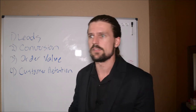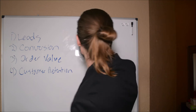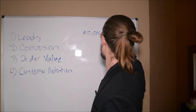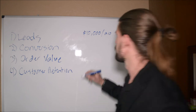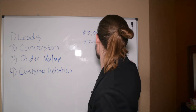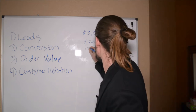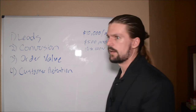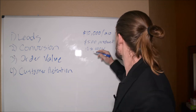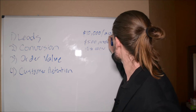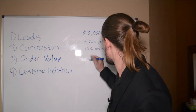Let's take some hypothetical numbers. Let's say that right now your business is getting $10,000 a month in revenue, and you have a product that's worth $500, and your conversion rate is 10%. So 10% of the leads that you're getting are buying your product. With those numbers, we can calculate how many leads we're getting: $10,000 divided by $500 is 20 sales, and at a 10% conversion rate, that means you're getting 200 leads.